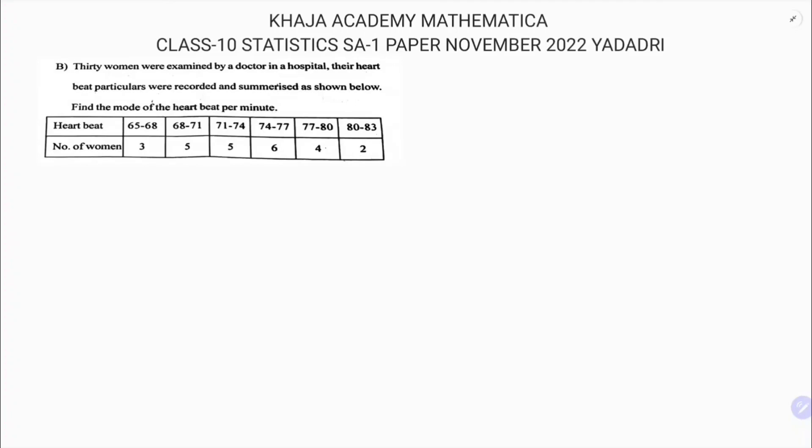30 women were examined by a doctor in a hospital. Their heartbeat particulars were recorded and summarized as shown. Find the mode of the heartbeat per minute. Here the heartbeat is the class: 65 to 68, 68 to 71, 71 to 74, 74 to 77, 77 to 80, and 80 to 83. The number of women is the frequency: 3, 5, 5, 6, 4, 2.